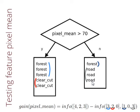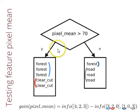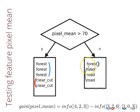Suppose we are trying to split the data using the feature pixel mean. When we apply the test — pixel mean is higher than a threshold, suppose 70 — we divide our sample set into two groups. In the left branch we have Forest and Clear Cut, and in the right branch we have Forest and Road. So we can see that with this threshold we could not isolate a single class in the left or right branch.